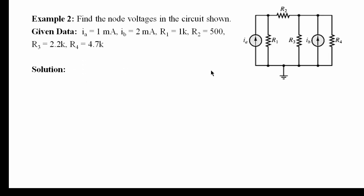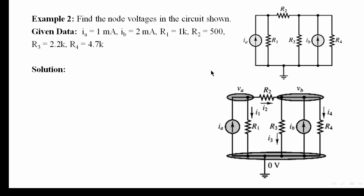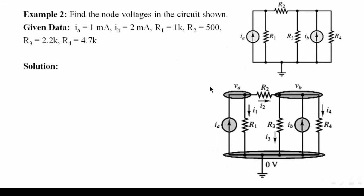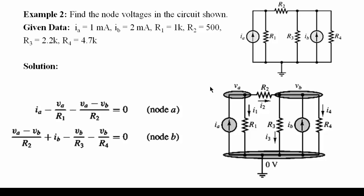Example 2. Find the node voltages in the circuit shown. Again, this is the reference node — the ground node. This is the first node; let's call it VA. And this is the second node, VB. This means we need two equations, one for VA and one for VB. By applying KCL at VA and VB, we get equations A and B.